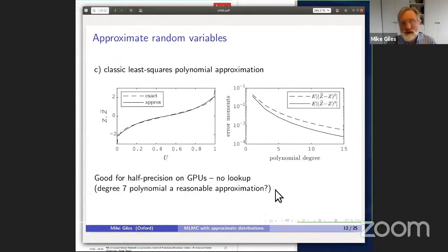The third option is a classic least-squared polynomial approximation. It really isn't very good. The error moments decay very slowly with polynomial degree, again because of the difficulty with the singularities at either end. But for a GPU, which is one of my other interests, that's a good treatment for the GPU in half precision.